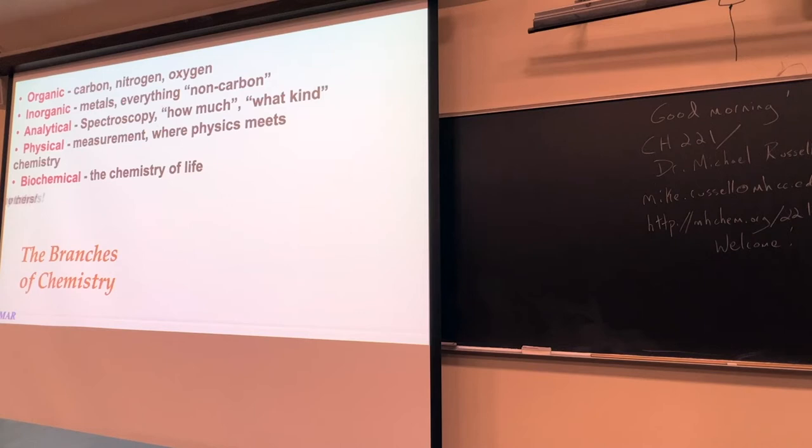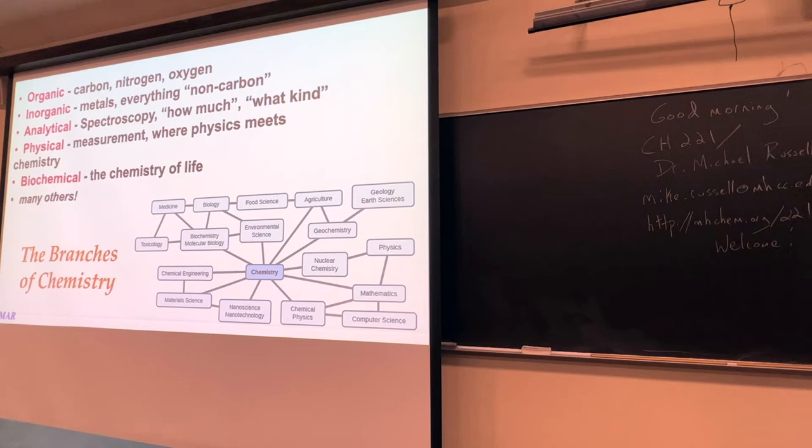In addition to that, there's lots of other kinds of chemistry. Geochemistry is where geology and chemistry come together. Chemical engineering, where chemistry and engineering come together. There's astrochemistry. Chemistry sometimes is seen as the central science because we have so many connections to so many other fields.